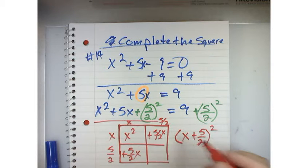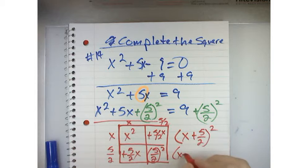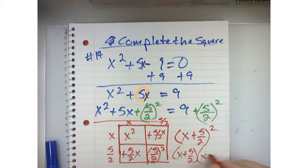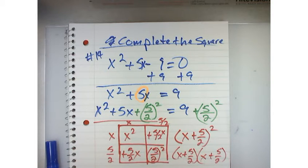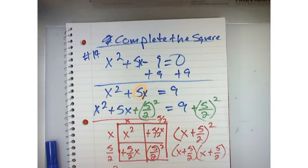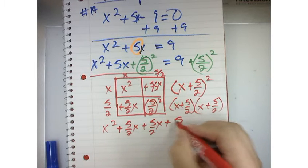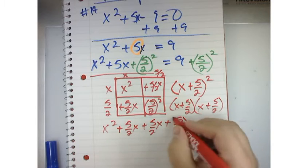5 halves squared. Now, what I'm really doing is multiplying it, because this is squared, I'm multiplying it by itself. And so, then my answer is x squared plus 5 halves x plus 5 halves x plus 5 halves squared.